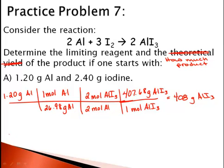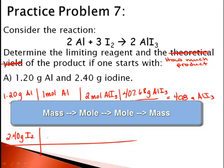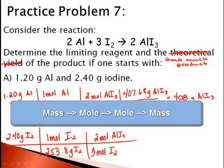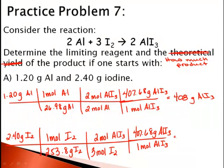My second reactant is 2.40 grams of iodine. Well, 1 mole of iodine is 126.9 times 2 because iodine is diatomic, and we get 253.8 grams of I2. I use my mole ratio and see that I have 3 moles of I2 and 2 moles of AlI3. And then I'll use the same molar mass, 407.68 grams of AlI3, and 1 mole of AlI3, and now I can do my math. So 2.4 divided by 253.8 times 2 divided by 3 times 407.68, I see that with 2.4 grams of iodine, I can only make 2.57 grams of AlI3.